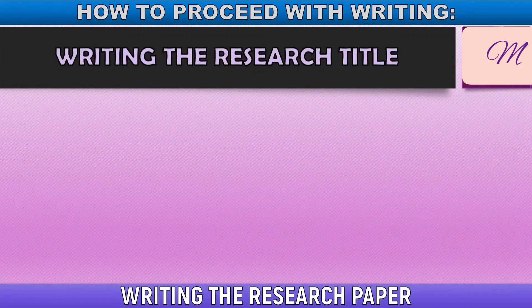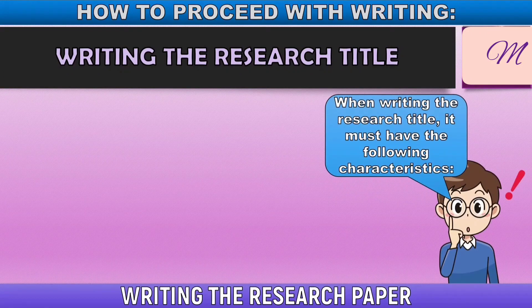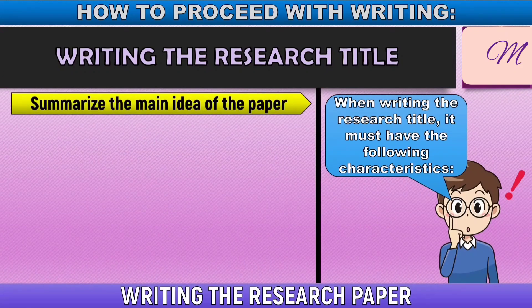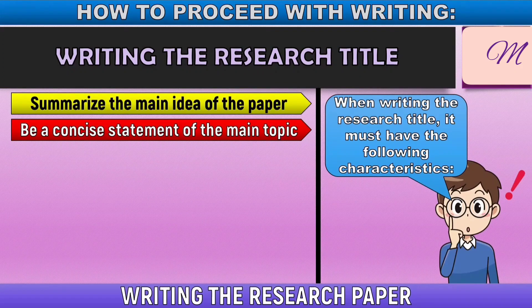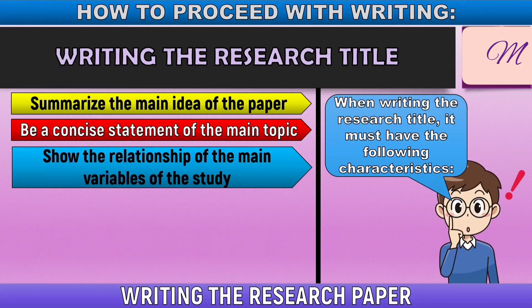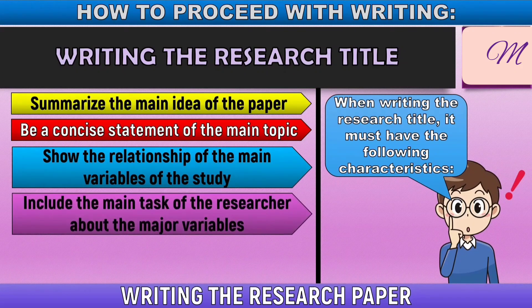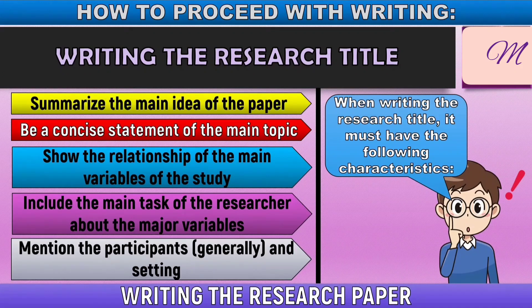After conducting initial readings, we proceed with writing the research title. When writing the research title, it must have the following characteristics. First, it must summarize the main idea of the paper, giving an overview of the topic and objectives. Second, it must be a concise statement of the main topic. Third, it must show the relationship between the main variables of the study. Fourth, it must include the main task of the researcher regarding the variables. And lastly, it must mention the participants generally and the setting — note the word 'generally,' as the title is a general statement, with specifics covered in the scope and limitations.